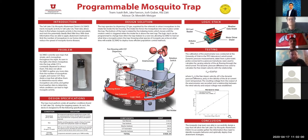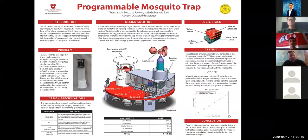The Salt Lake City Mosquito Abatement District tracks mosquito activity throughout the Salt Lake Valley in order to track the spread of mosquito-borne illnesses and deploy strategies to reduce mosquito population. The problem they are currently having is that the traps they're using don't give them any feedback on when they should be acting.